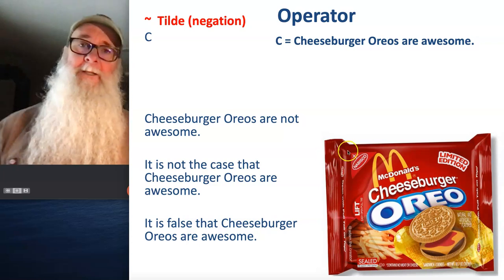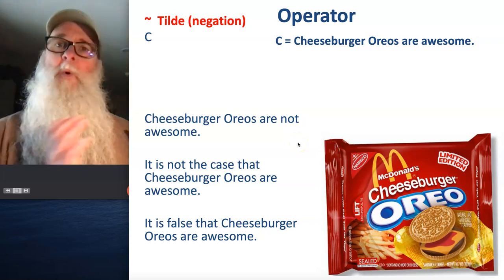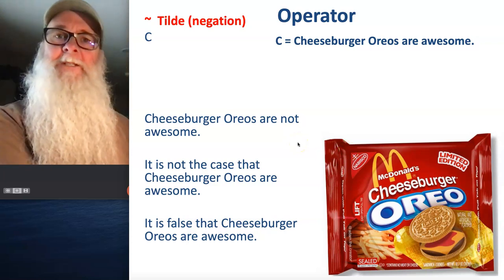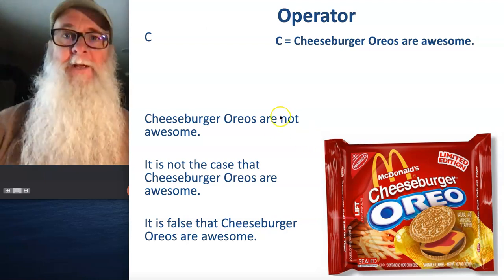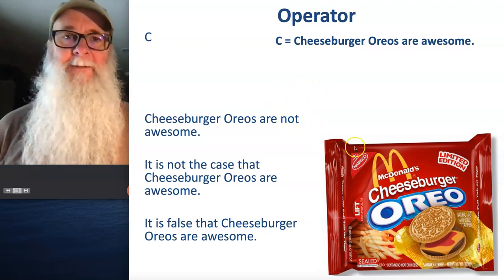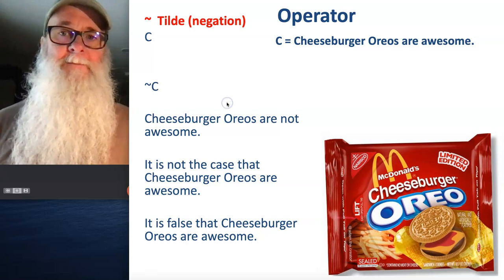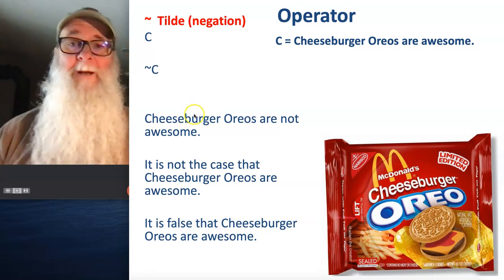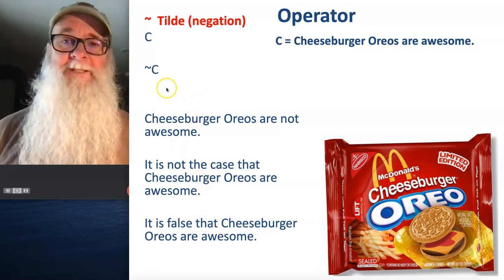When tilde appears, it's saying this: whatever letter follows me represents a statement that is not true. So if C represents the statement 'cheeseburger Oreos are awesome,' then tilde C represents all three of these statements.